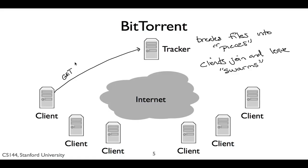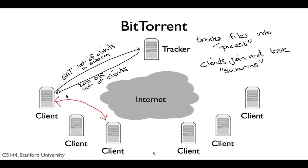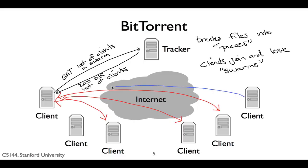To join a torrent, your client contacts the tracker — again over HTTP — to request a list of other clients. Your client opens connections to some of these other clients and starts requesting pieces of the file. These clients, in turn, can request pieces on their own. Furthermore, when a new client joins the swarm, the tracker might tell this new client to connect to your client. So rather than a single connection between a client and a server, you have a dense graph of connections between clients dynamically exchanging data.